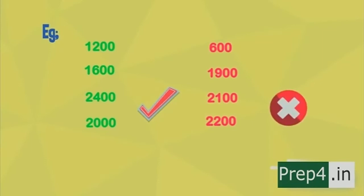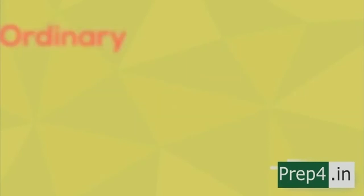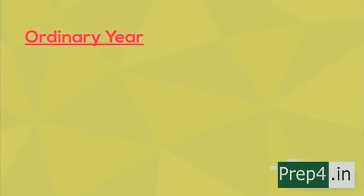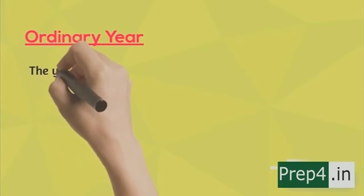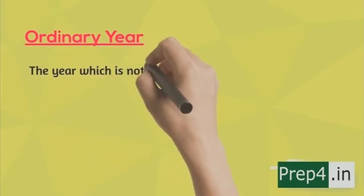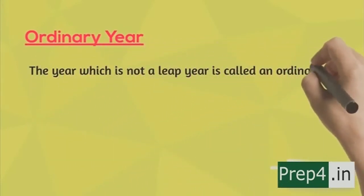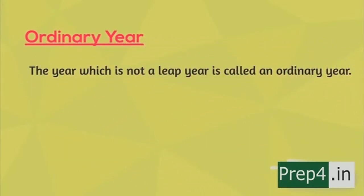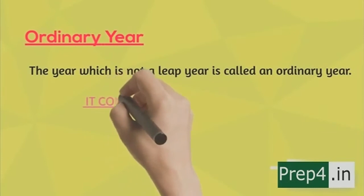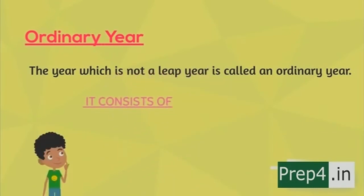Now let's see what an ordinary year is. This is quite simple — the year which is not a leap year is called an ordinary year. It consists of 365 days and 52 weeks and one odd day, as mentioned earlier.